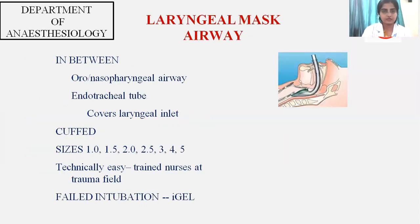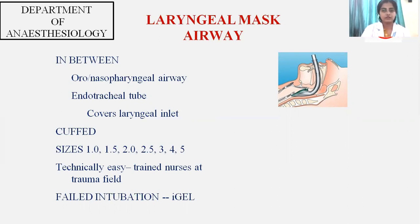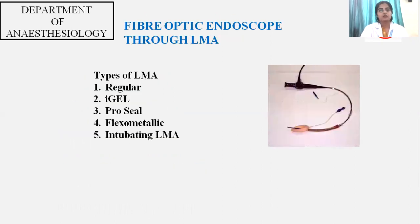The laryngeal mask airway lies over the laryngeal inlet, sitting between the oropharyngeal or nasopharyngeal airway and the endotracheal tube, covering the laryngeal inlet. LMAs are sized from number one to number five. They are technically easy to insert even without muscle relaxants. They are used in cases of difficult intubations; you can use second generation LMAs such as the ProSeal. Different types include regular LMAs, ProSeal LMAs, flexometallic LMAs, and intubating LMAs. Certain procedures like fiber optic endoscopy can also be carried out through the LMA.